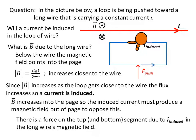So if you put your finger in the direction of the induced current and curl your other fingers into the page, your thumb then points downward. So you have an F_induced that points downward.